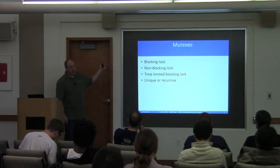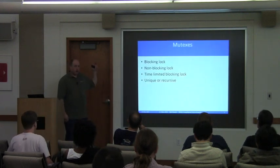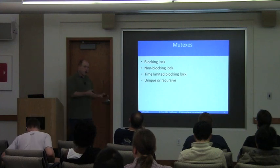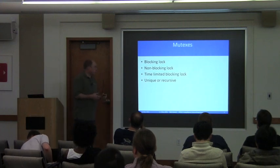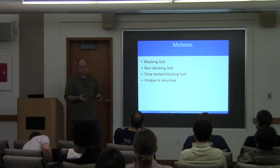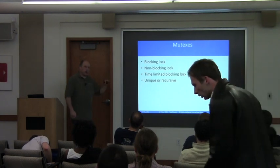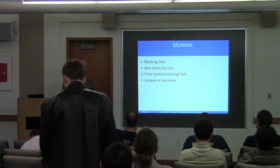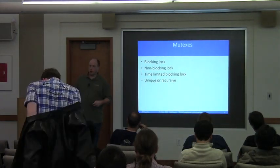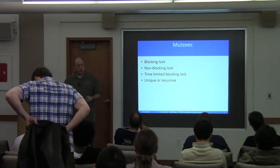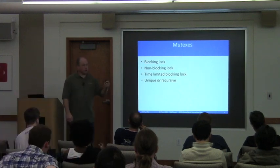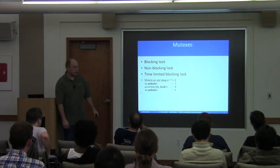Mutexes: we have the options of locking one in a blocking way, non-blocking, or even time-limited blocking. They come in a unique and recursive form, where unique means only one thread can own the lock at a time, and recursive means the same thread can acquire the lock repeatedly and then just has to unlock it the same number of times.